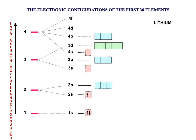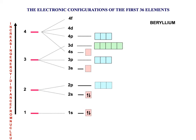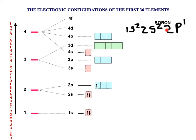Lithium has 3 electrons — shell 1 is now full, so the third electron must go into the next lowest energy level, which is 2S. This is written as 1S² 2S¹. Beryllium is 1S² 2S². Boron's 2S orbital is now full, so the fifth electron goes into the 2P orbital: 1S² 2S² 2P¹. If you add the subscript numbers they should give you the total number of electrons — boron has 5, so that adds up to 5.